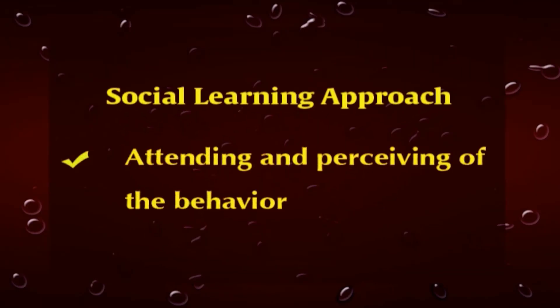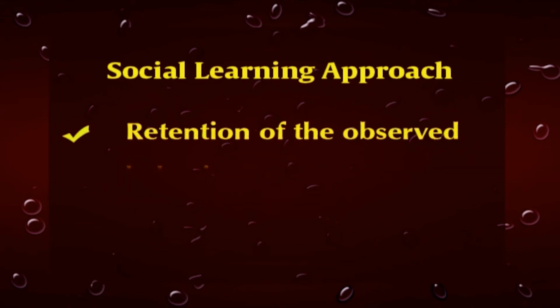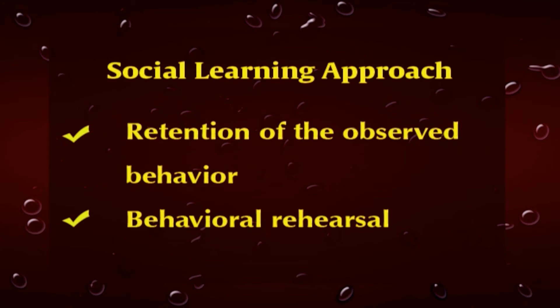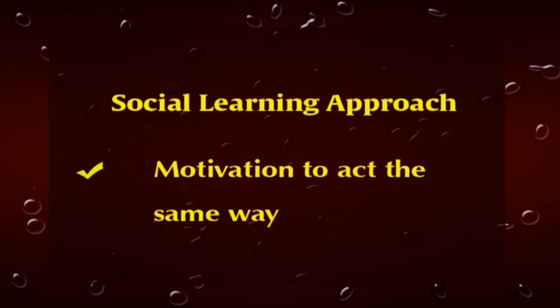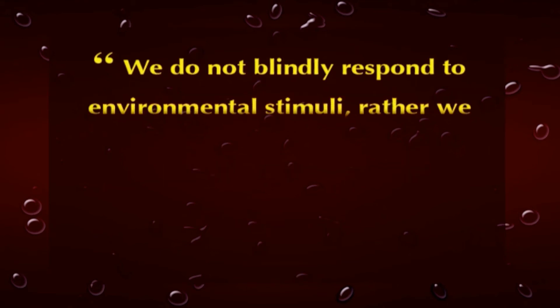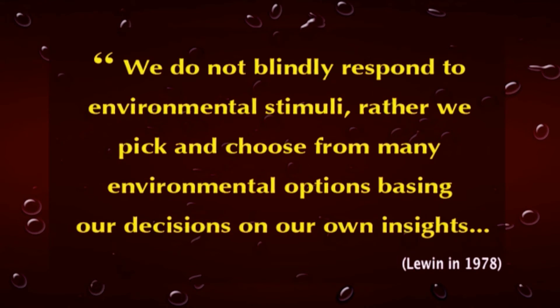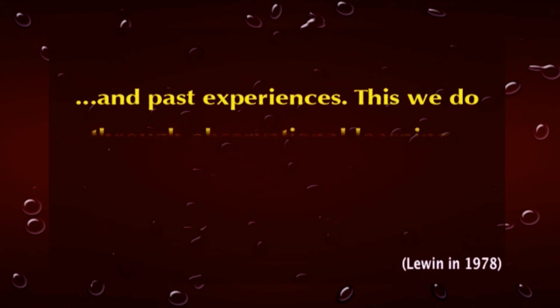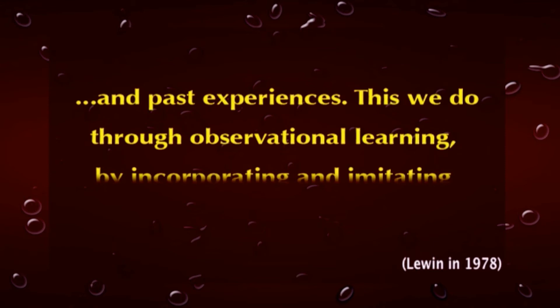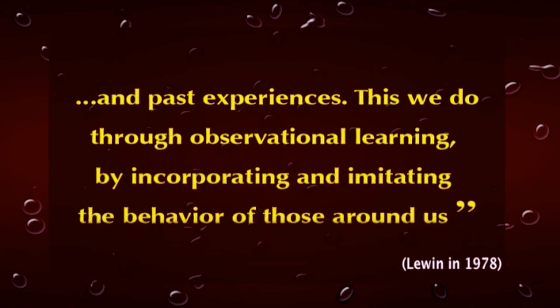Bandura's hierarchy includes: first, attending and perceiving the behavior; second, retention of the observed behavior; third, behavioral rehearsal; and fourth, motivation to act the same way. Levin writes: 'We do not blindly respond to environmental stimuli; rather, we pick and choose from many environmental options, basing our decisions on our own insights and past experiences.' This we do through observational learning by incorporating and imitating the behavior of those around us. Authors supporting the social learning approach see learning as a process of social participation, placing it in social relationships rather than as mere acquisition of knowledge. The social engagements and the nature of the situation provide the proper context and significantly impact the process.